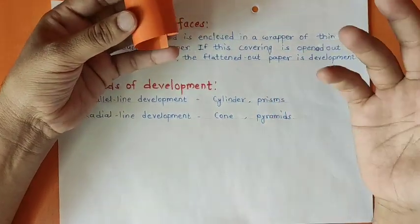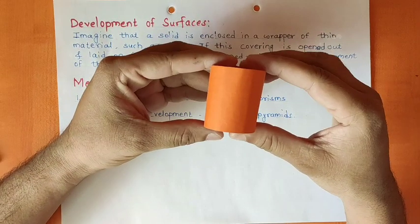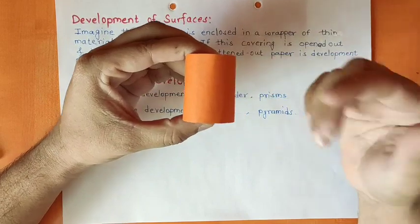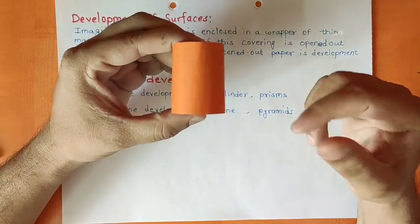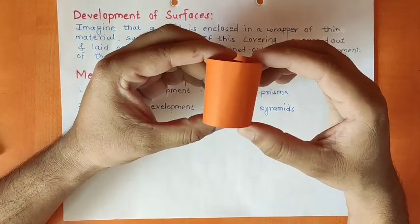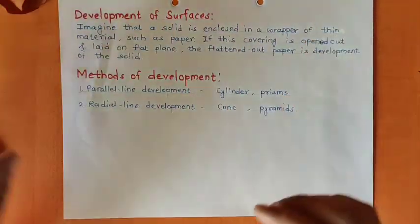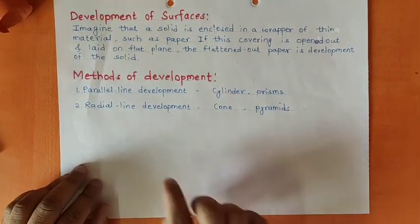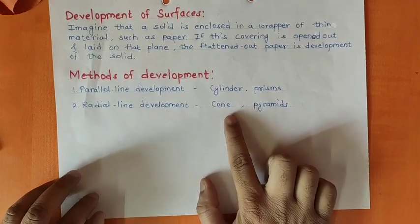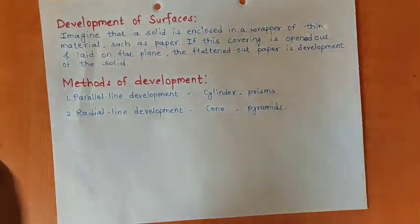Different types of solids have already been covered in my previous lecture, that is introduction to solids. I will link that video in the description. If you have not referred to or watched that video, please go and watch it. The second type of development is radial line development, and it is observed in case of cone and pyramids.